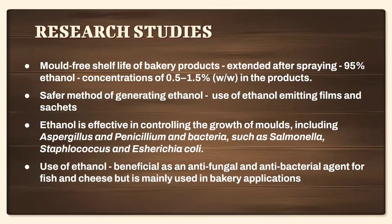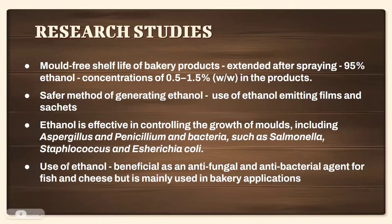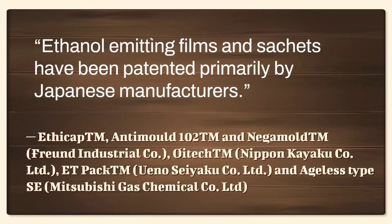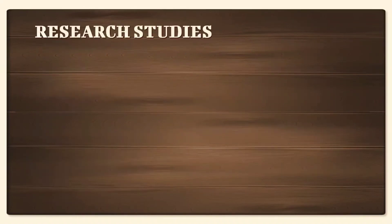Research studies show that when ethanol is sprayed on bakery products, the products were mould-free and shelf life was extended. The usage was 95–97% ethanol at a concentration of 0.5 to 1.5 percent in the product. Another method is using ethanol emitter films or sachets, which is considered a much safer method. Ethanol is effective in controlling the growth of moulds such as Aspergillus and Penicillium, and bacteria like Salmonella, E. coli, and Staphylococcus. It is also beneficial as an antifungal and antibacterial agent mainly for fish and cheese, though the majority of applications are in the bakery industry.